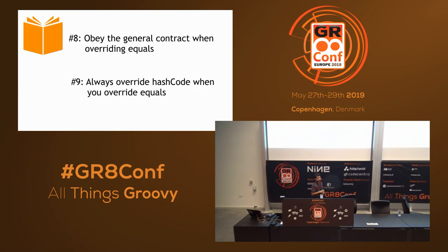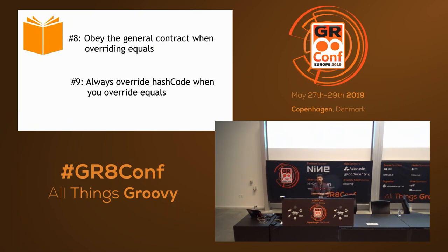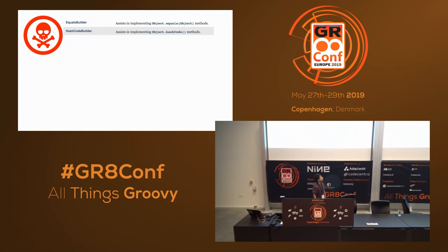Let's see what Effective Java says here. It says: obey the general contract when overriding equals, and always override hashCode when you override equals. These are classes from the Apache Commons Lang library — they provide EqualsBuilder and HashCodeBuilder, which you might want to use.